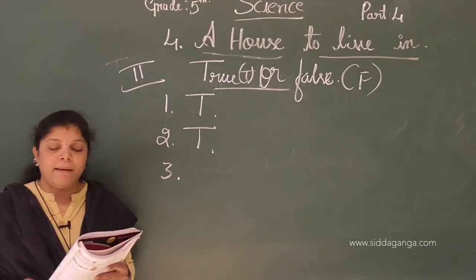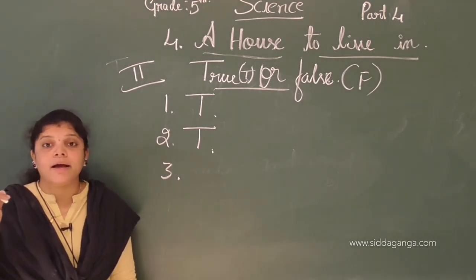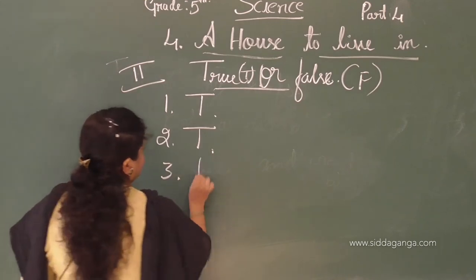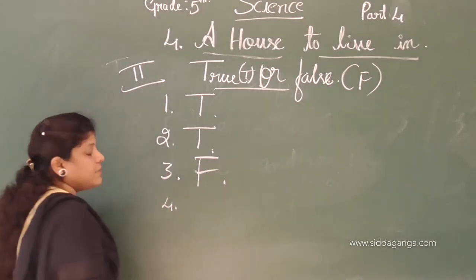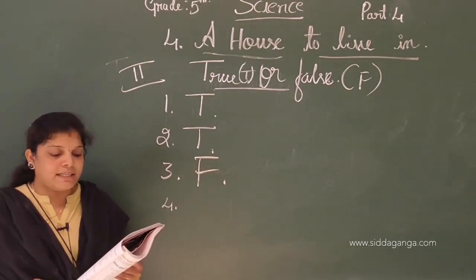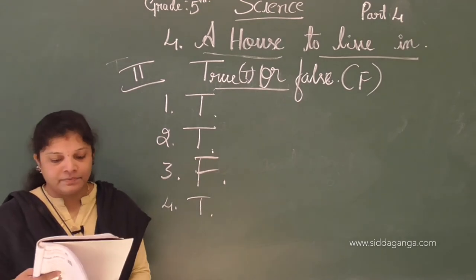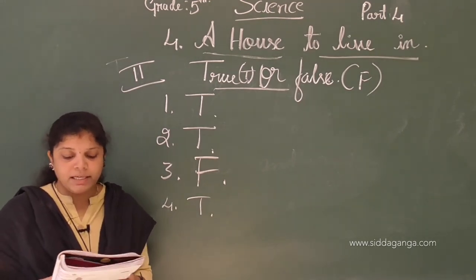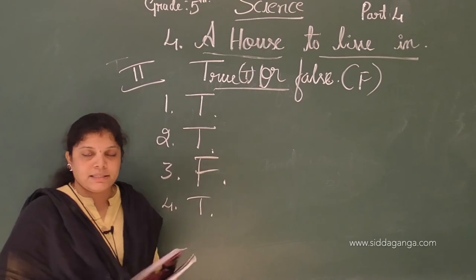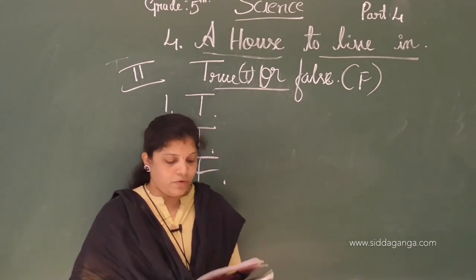Third statement: we need less money to build a big house — this is false. To build a big house we need a lot of money; to build a small house we need less money. Write F. Fourth: a house facing northwest gets maximum sunlight — true. Fifth: the house should have a good drainage system to carry away waste water from different parts of the house — true. We have completed the true or false section.